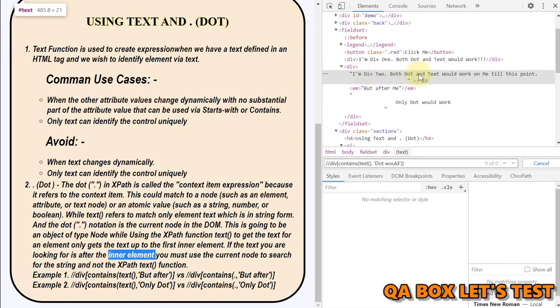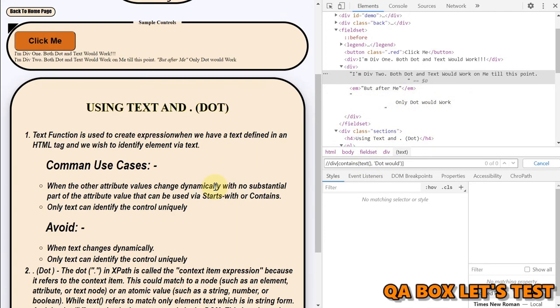If we have to identify this div node using this, which is basically wrapped inside another HTML tag or this text, which is after this, so you have to go for dot. So that's the difference between dot and text text function. Thank you so much.